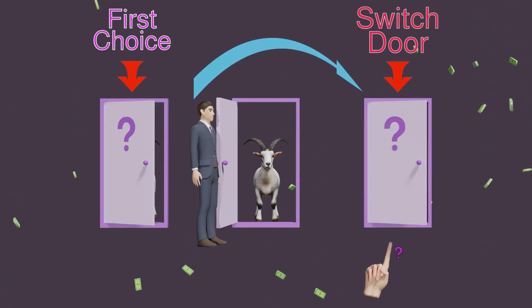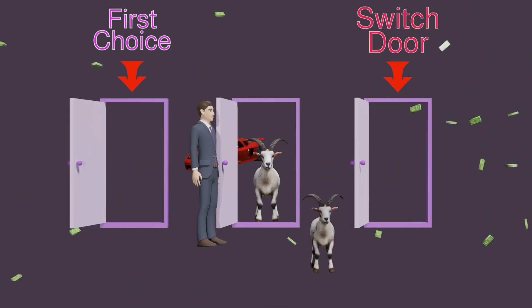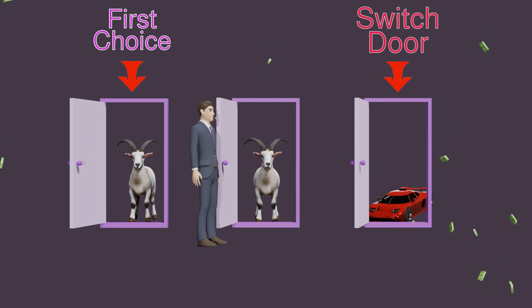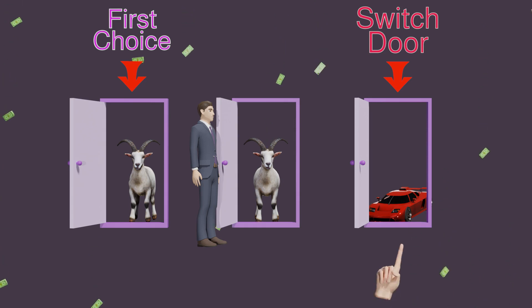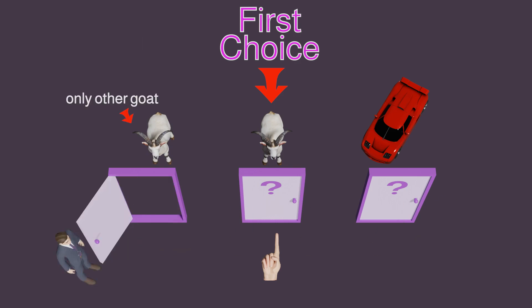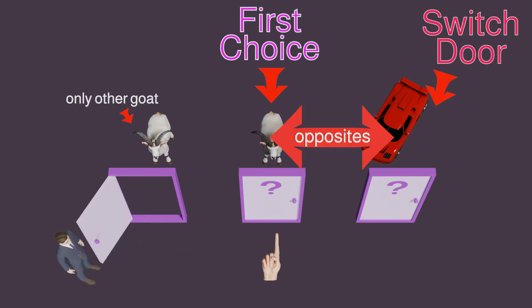Then he asks if you want to stay with your first choice or switch to the other unopened door, the switch door. Here's why the first choice and the switch door always have opposite items, and why they always say switch. If you first chose a door hiding a goat, Monty Hall has to reveal the only other door that has a goat behind, leaving a car behind the unopened switch door.